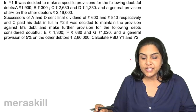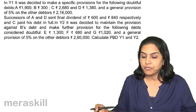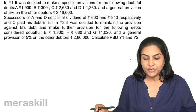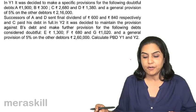Successors of A and D sent a final dividend of 600 and 840 respectively, and C paid his debt in full.